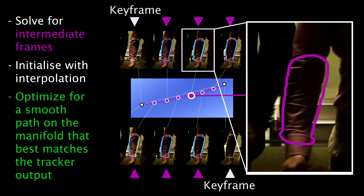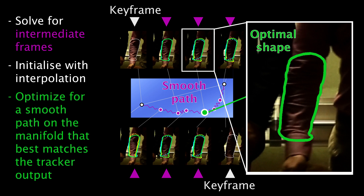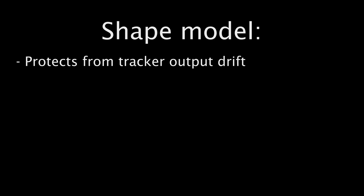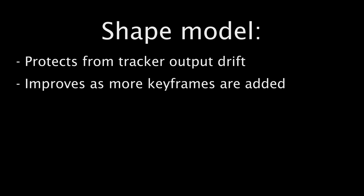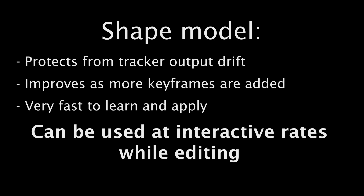Here we show the optimisation proceeding. The initial purple estimates are moved towards the optimal result, shown in green. Our shape model for rotoscoping protects against drift in the tracking output and improves as more keyframes are added. Furthermore, it can be trained and applied at interactive rates so that it may be used during editing.